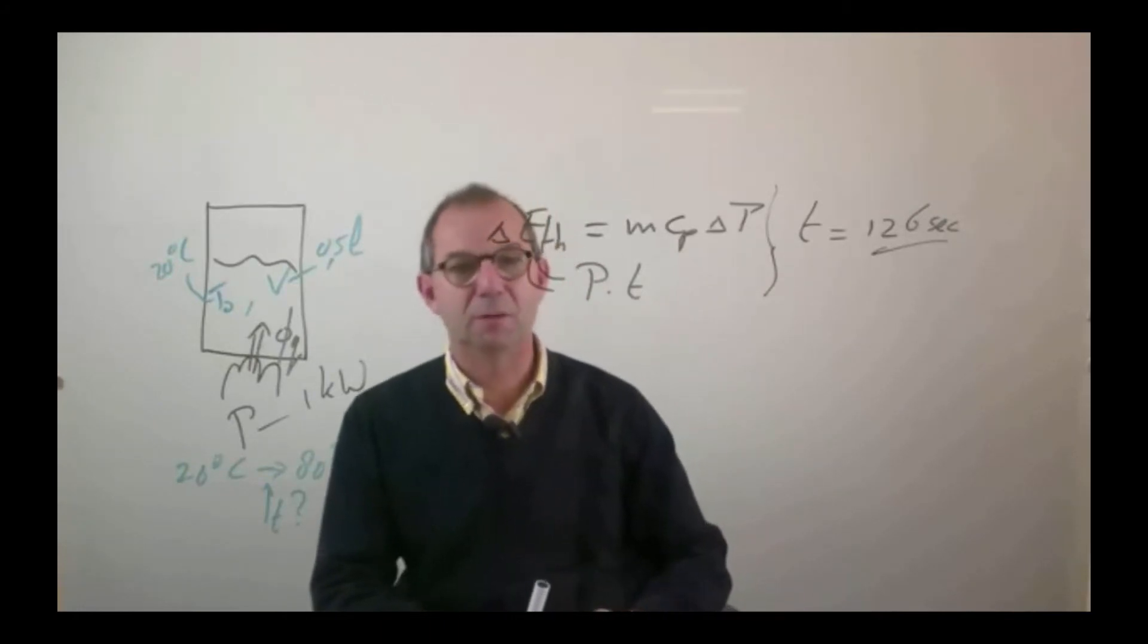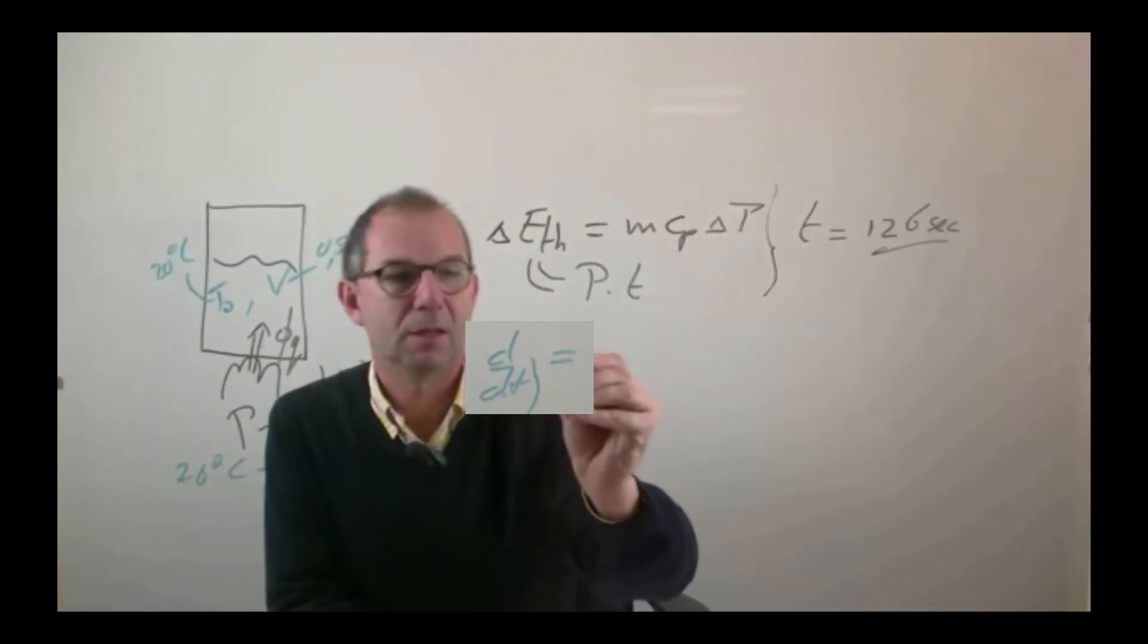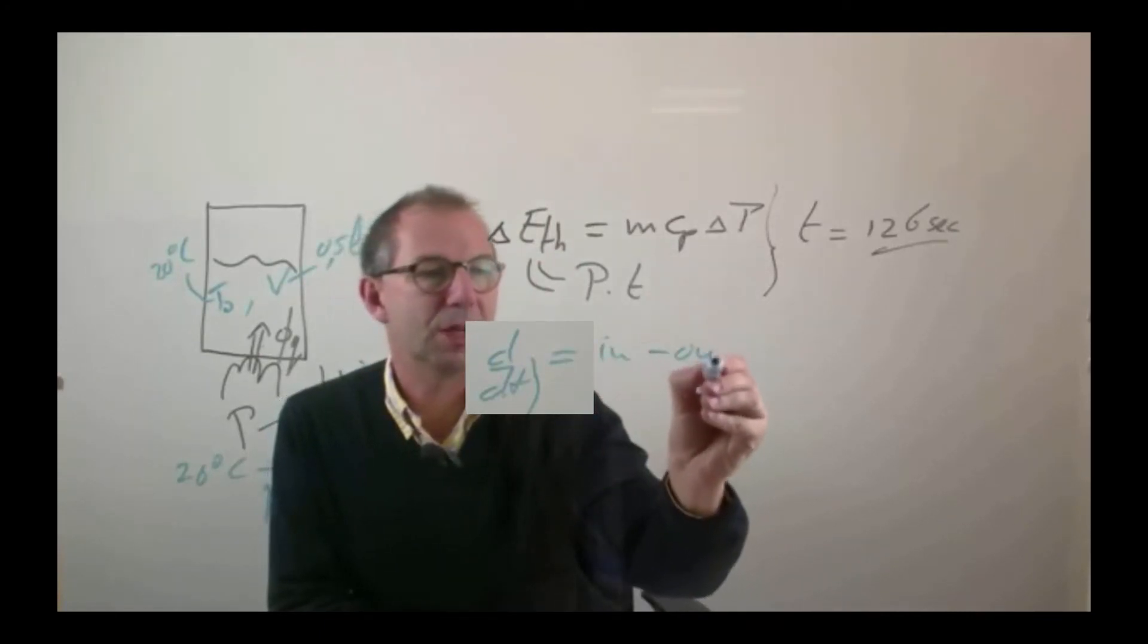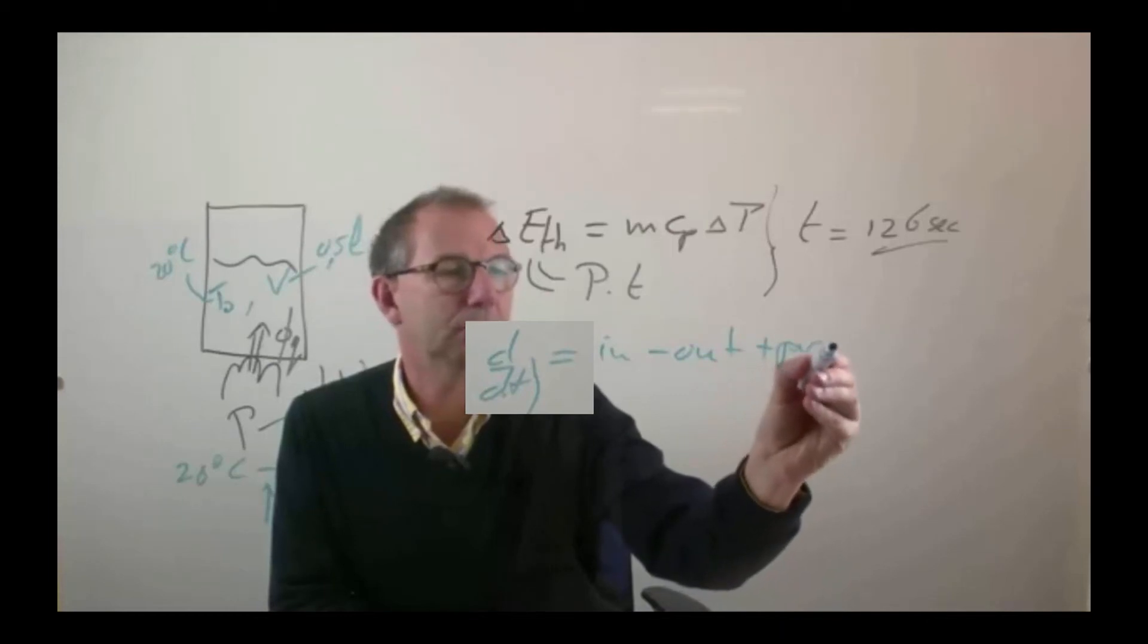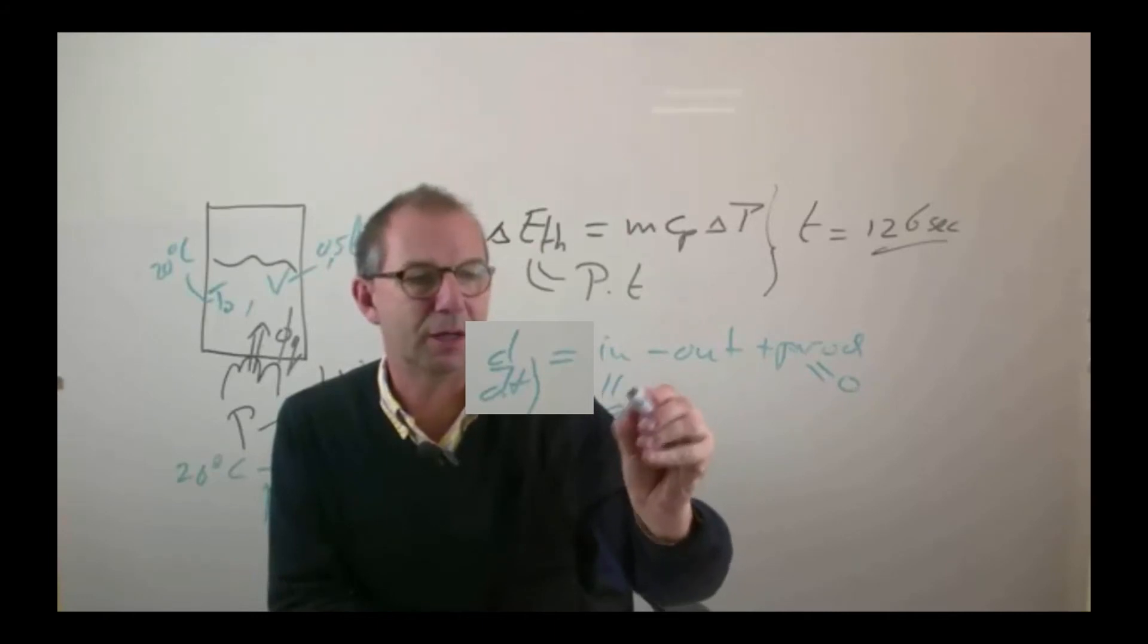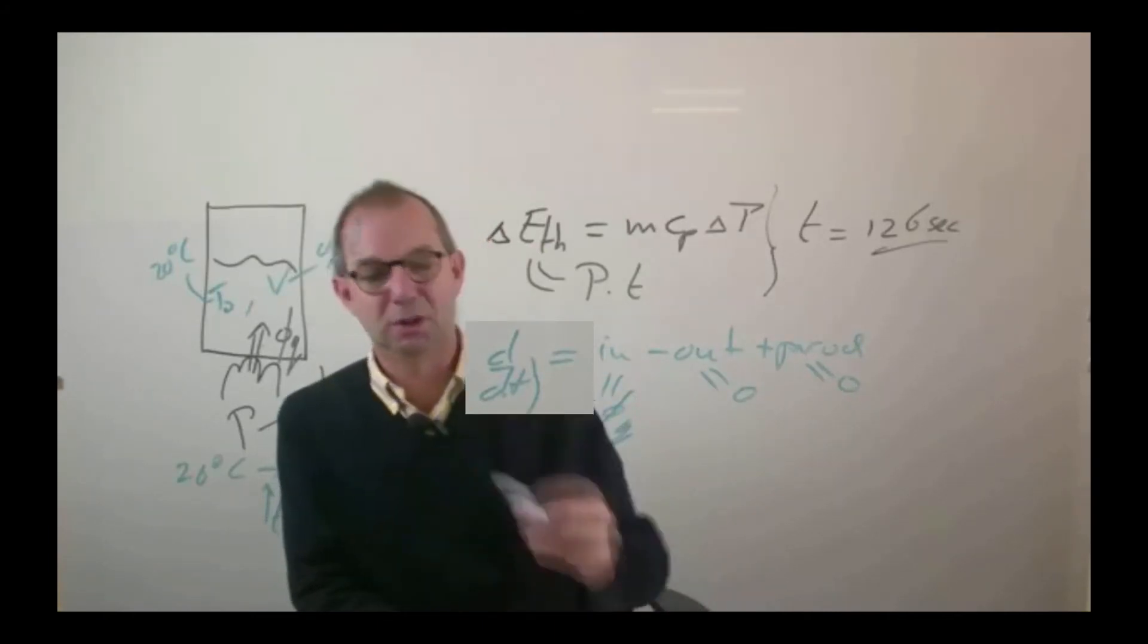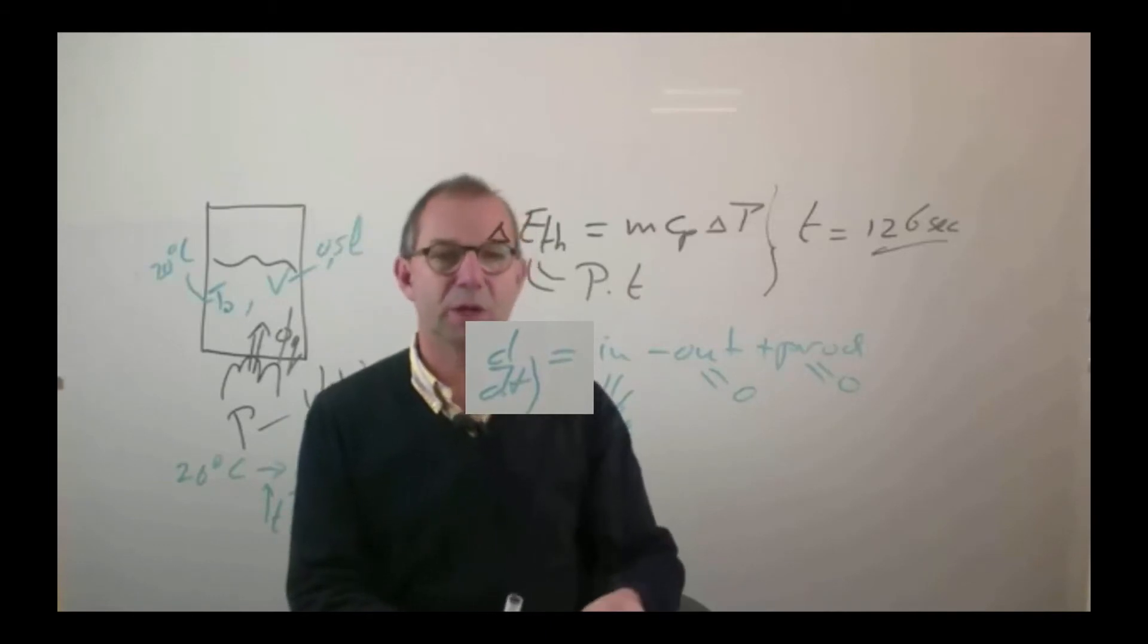We can do that in the format of a balance. We've seen that before. It's an unsteady system, so you write the standard form. There is no internal production, heat is flowing in, phi q. There is nothing flowing out in this example, we ignore losses to the surrounding, we ignore vapour production.